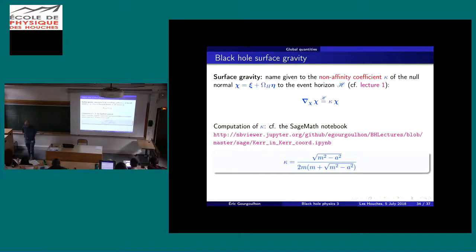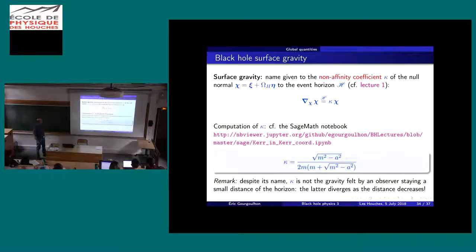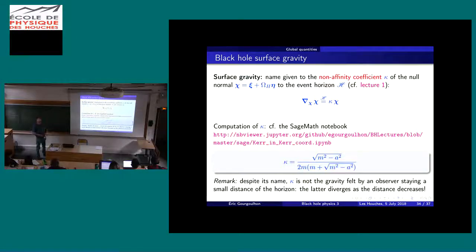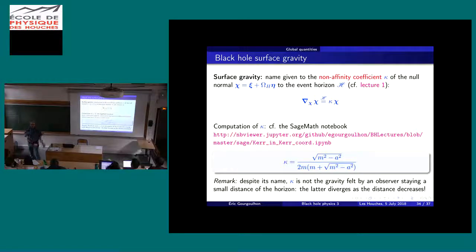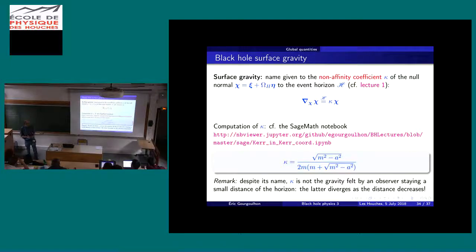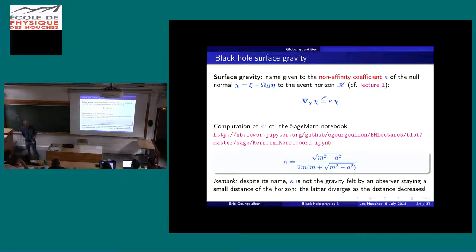The zeroth law says the surface gravity of a black hole in equilibrium is constant over all the horizon — like the temperature of a body in equilibrium. We will discuss this next week. As for the name 'surface gravity': it's somewhat misleading, since the actual gravity felt at the surface of a black hole is infinite. It's a kind of rescaled surface gravity. There was a dispute: Hawking chose this name while Brandon Carter favored 'non-affinity coefficient'. It has a physical-like interpretation: the force you as an observer at infinity would need to exert via an infinitely stiff rope to hold an object near the black hole is finite due to time dilation.